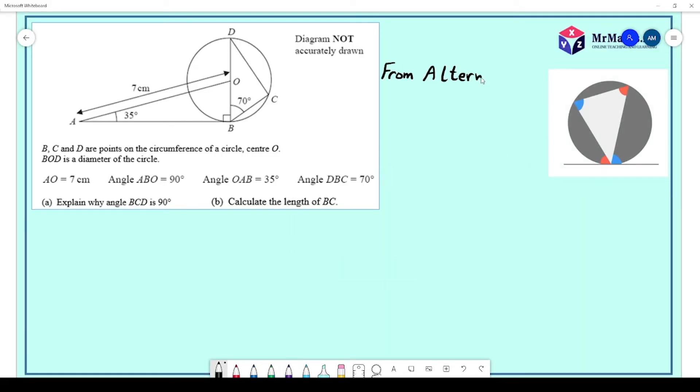First of all, because of the alternate segment theorem, angle ABO equals angle BCD. Therefore, angle BCD equals 90 degrees. That answers part A.